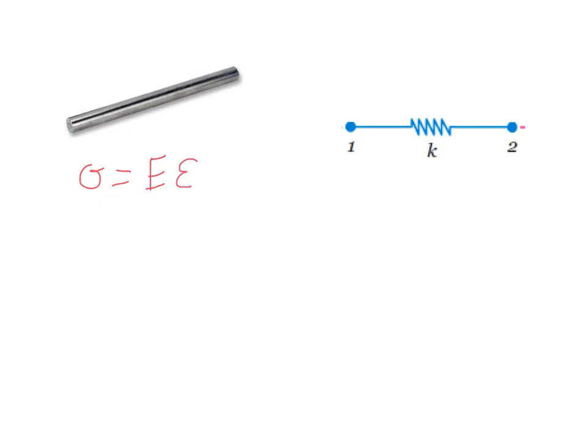We might also say that we know a little something about how strain relates to displacements. So for example, in the axial direction, we know that strain is equal to the derivative of the displacement with respect to x. So that's as an example.